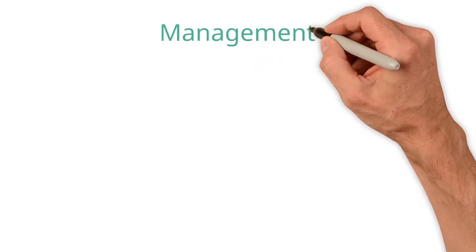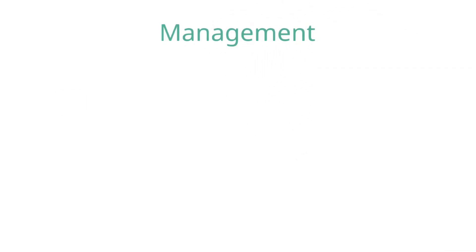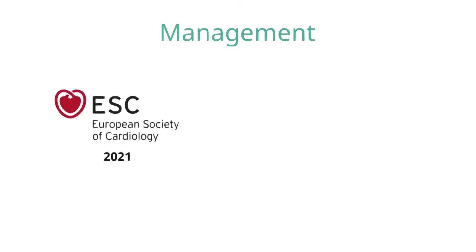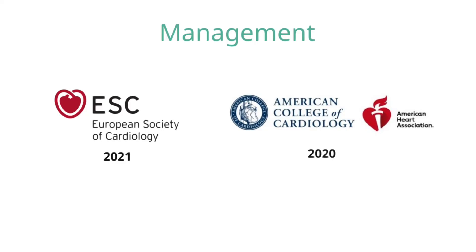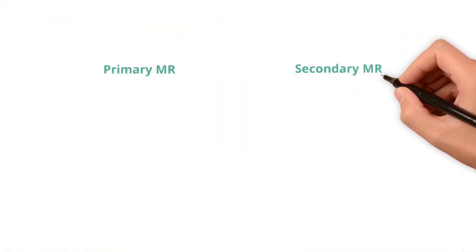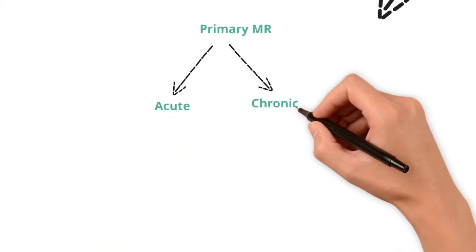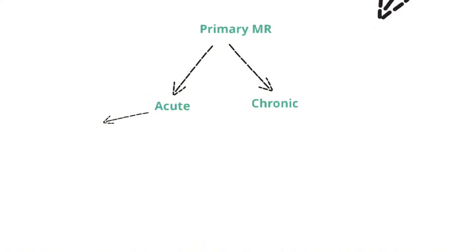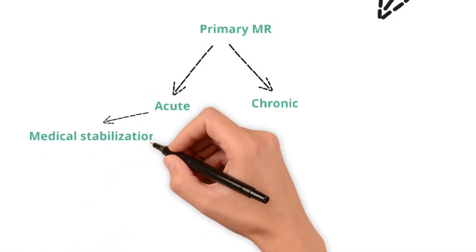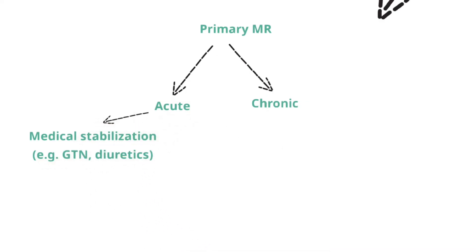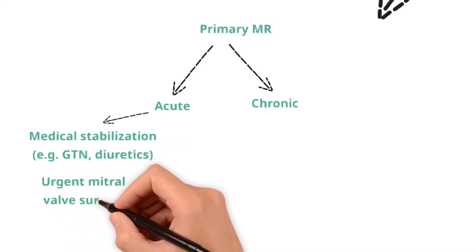So how do we manage mitral regurgitation? These guidelines are based on the valvular heart disease guidelines from both the European Society of Cardiology in 2021 and American College of Cardiology/American Heart Association in 2020. The management of mitral regurgitation depends mainly on whether it is primary or secondary. In acute primary mitral regurgitation, such as secondary to infective endocarditis or papillary muscle rupture, the patient is usually highly unstable. Once they are stabilized with medical therapy, such as diuretics for pulmonary edema and IV nitrates to reduce LV afterload and hence the regurgitant fraction, urgent surgical valve replacement is usually required.